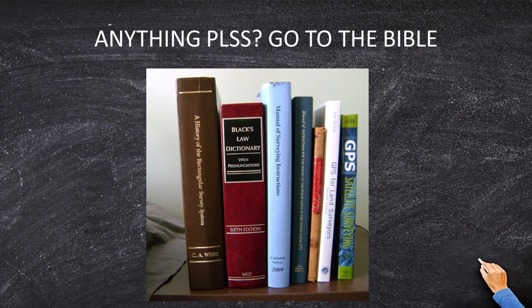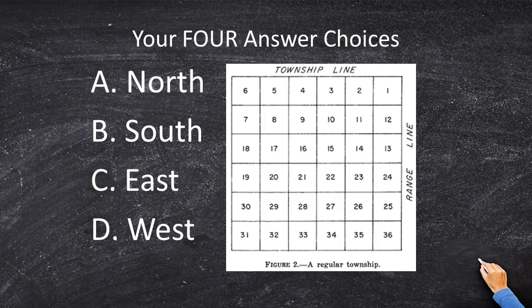So what do our answer choices tell us? If you review the Public Land Survey System Instruction Manual, it will say that all of the excess or deficiency is placed in the north and the west of the township. Going back to our diagram, the north line of the township runs sections one through six, and the west line of the township is sections six, seven, eighteen, nineteen, thirty, and thirty-one.